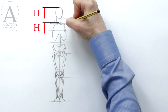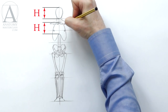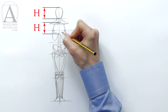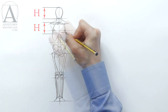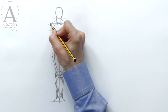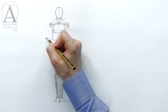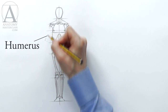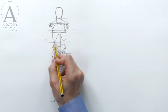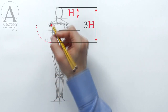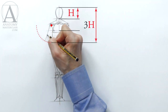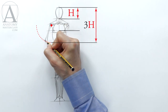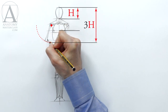The distance between the upper edge of the ribcage and the lower end of the breastbone is equal to the height of the head. The upper arm bone is called the humerus, and it runs from the shoulder to the elbow. The lower end of the humerus coincides with a line that is three times the height of the head from the top of the figure when the arm is hanging down.